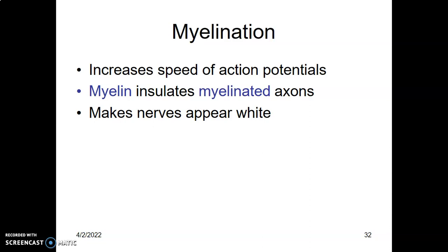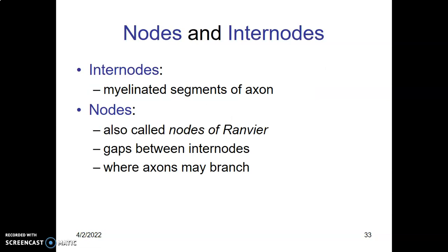The purpose of myelination is to increase the speed of action potentials. When you insulate the axons, you increase the speed of transmitting the neuronal signal in the form of an action potential. The axon usually has nodes and internodes — the internodes are the myelinated portions of the axons.